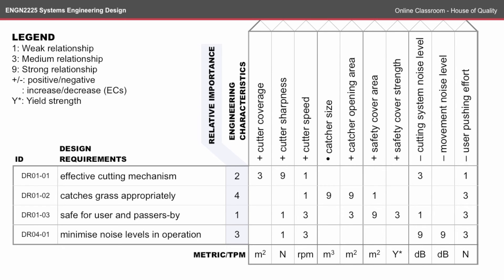You'll also notice that most of the requirements happen along the diagonal — from cutter coverage at the top left down to minimized noise levels at the bottom right — there's a loose correlation along that diagonal. This is because we've basically defined the engineering characteristics in that order. But you'll also notice some things have a really strong impact on design requirements: our engineering characteristic of user pushing effort actually features in all of these design requirements.